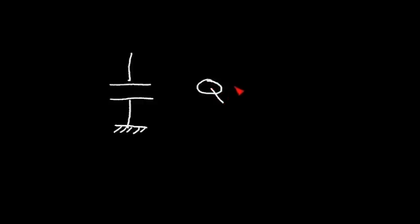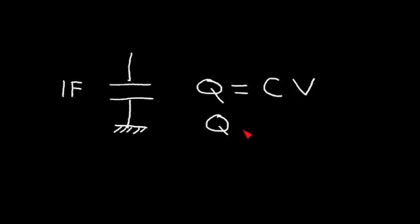Recall that a capacitor stores charge. The unit of charge is the coulomb — just as dollars is a unit of money. There's a very simple equation for the charge a capacitor stores: Q equals capacitance in farads times voltage. If I make the value of my capacitor one farad, I end up with charge equal to one times the voltage, so I can know how much charge is on the capacitor just by measuring the voltage.